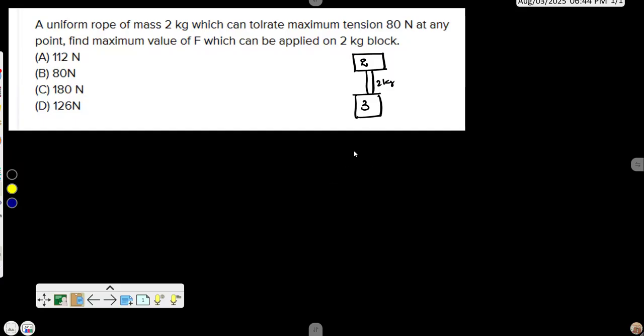Let us do this question. In this, he says this is a system where a 2 kg block is present, a 3 kg block is present, and there is a 2 kg rope that is present. Now he says what is the